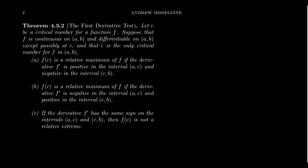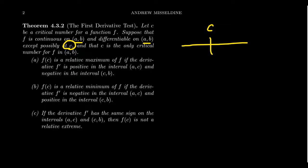Summarizing what we just described, we get the so-called first derivative test. Let c be a critical number for our function. Suppose that f is continuous on the interval a to b and differentiable on a to b, except maybe at c, since c is a critical number — meaning the derivative is either zero at c or undefined at c. So we aren't necessarily differentiable at c, but we do expect it to be continuous there, such as at a sharp corner.